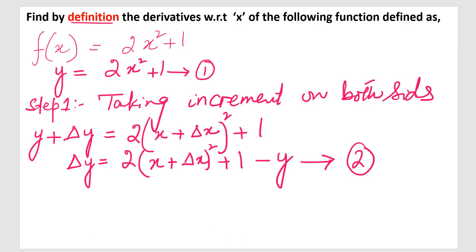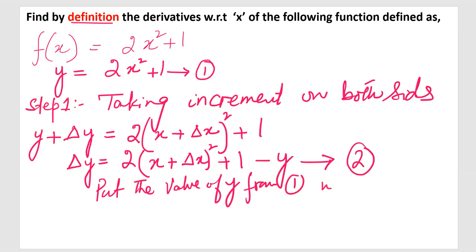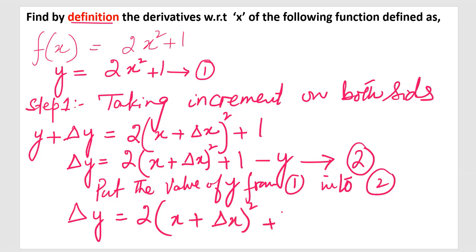Since y = 2x² + 1 from equation one, we substitute its value into equation two. So Δy = 2(x + Δx)² + 1 − (2x² + 1). You must be very, very careful with the negative sign in math — make a bracket and write 2x² + 1 in parentheses. If you forget the parenthesis, you may not change both signs correctly. This completes our first step.